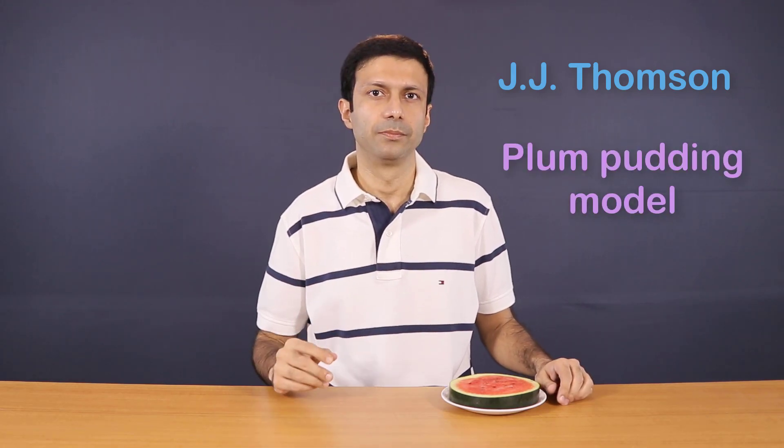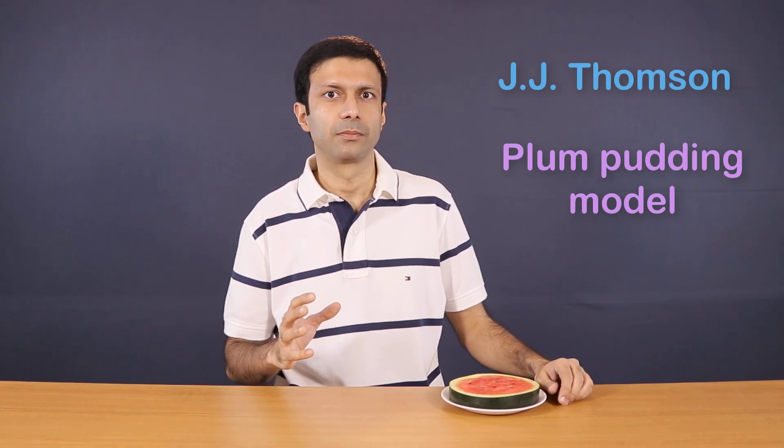A scientist by the name of J.J. Thomson, who discovered the electron, proposed the plum pudding model of an atom. Now by that time, the neutron particle had not been discovered. So the scientists were only working with protons and electrons. Now what was his plum pudding model? He said that the electrons are like tiny plums sitting in this large positive pudding.